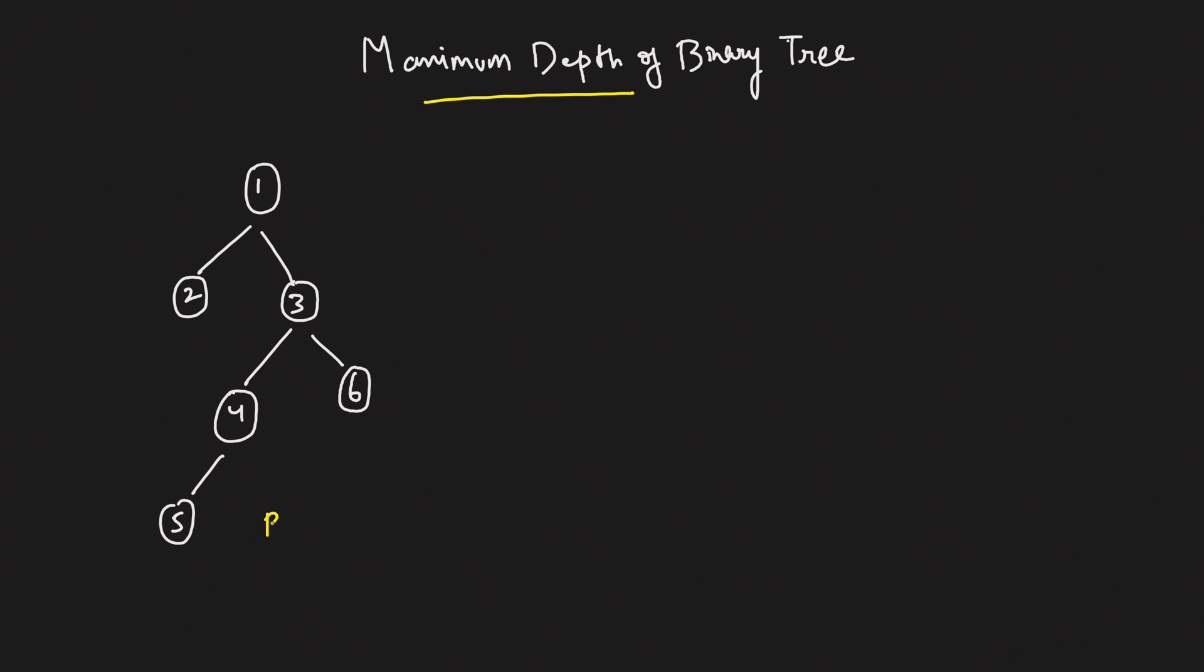So for this binary tree, what's the maximum depth? 1, 2, 3, 4. So I can say the maximum depth or height of this binary tree is nothing but 4. So we've got to figure that out.